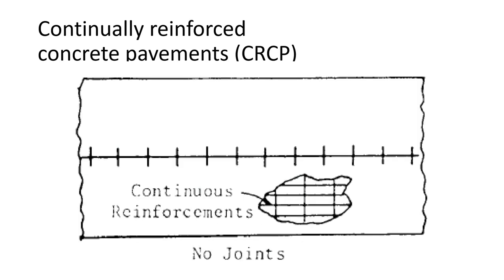Continuously reinforced concrete — I-65 had a lot of this when it was first built in the 1960s. The idea was that with all that reinforcement, no joints were needed. It turns out that doesn't really work well. INDOT has generally given up on continuously reinforced for mainline. Looking at pictures from the original I-65, it did not age well — the thermal properties were just too much for it over time.